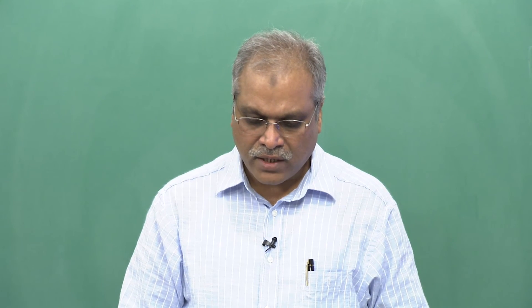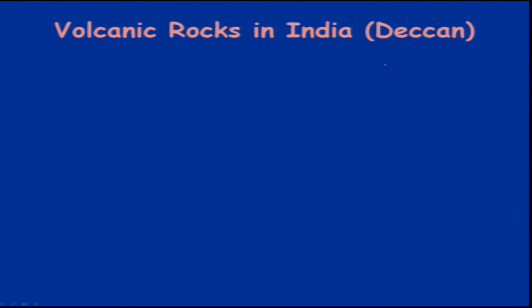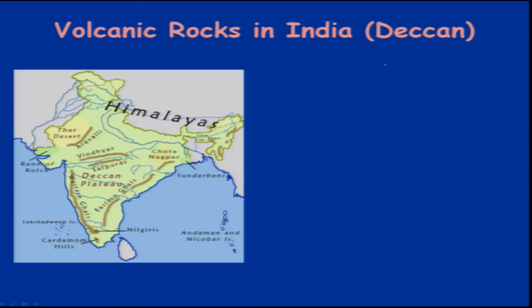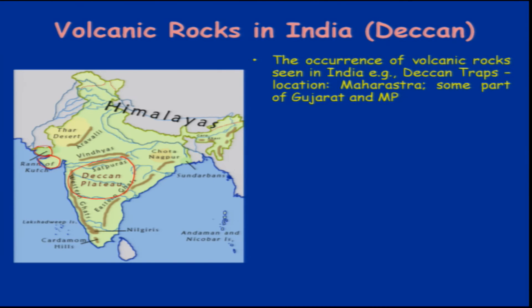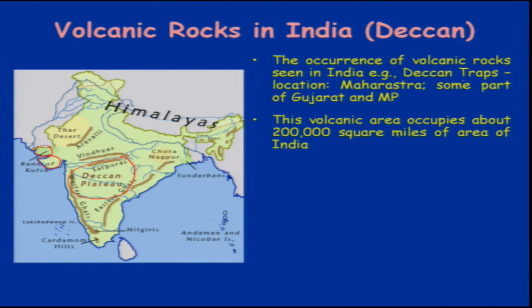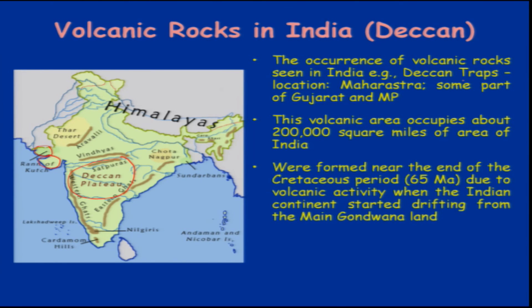The large area of the Indian subcontinent is occupied by the Deccan Plateau, which is comprised of volcanic rocks. We also have volcanic rocks in the Kutch region. The occurrence of volcanic rocks in India — the Deccan Traps — is located in Maharashtra, parts of Gujarat, and Madhya Pradesh. This volcanic rock occupies almost 2 lakh square miles of area in India.